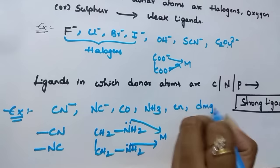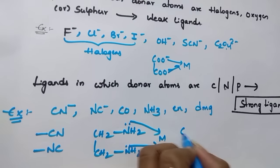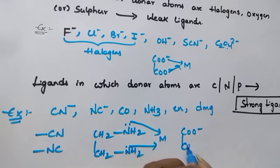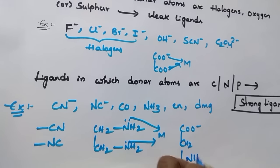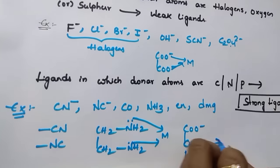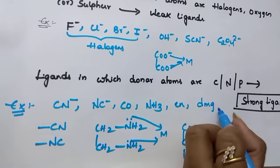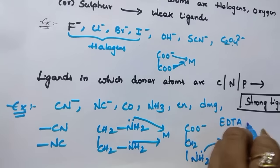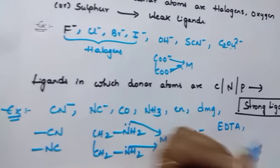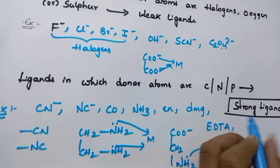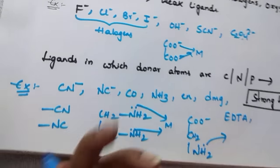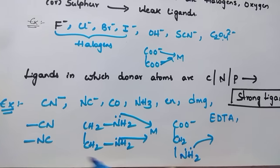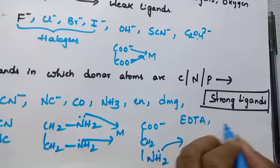Dimethylglyoximate ion — it is also a strong field ligand. Its structure is CO⁻ CH₂NH₂. Nitrogen is the donor, so it is a strong field ligand. EDTA — nitrogen is the donor, and because of the greater number of chelate rings present in EDTA, it acts as a strong field ligand.